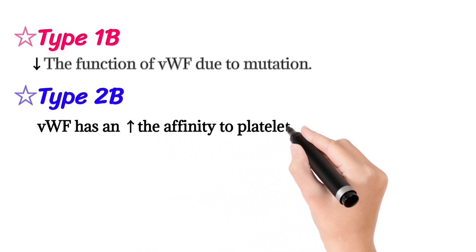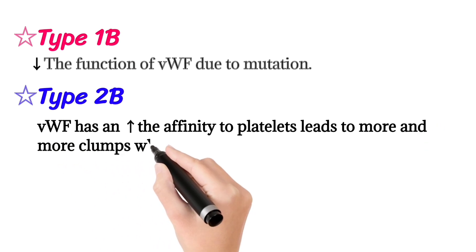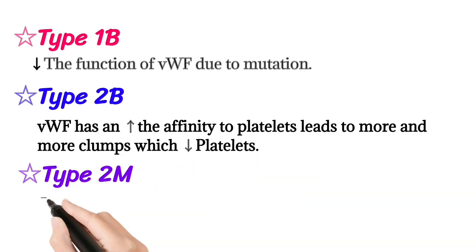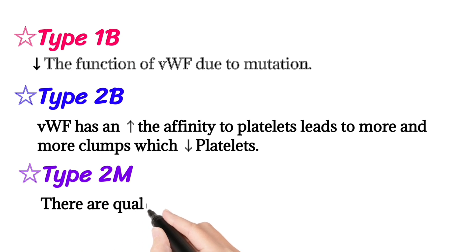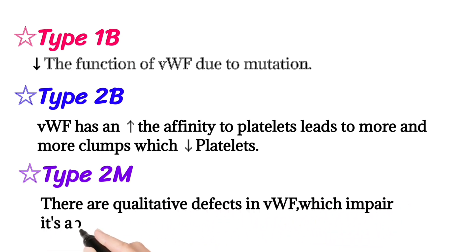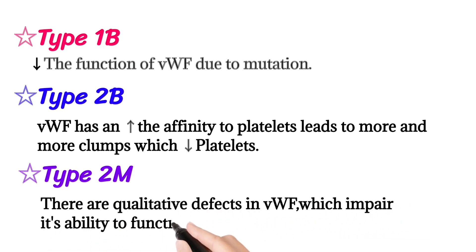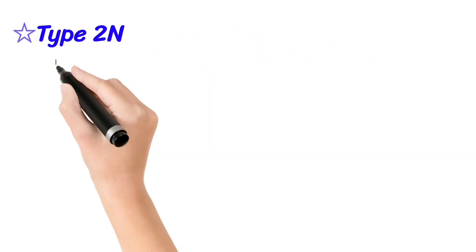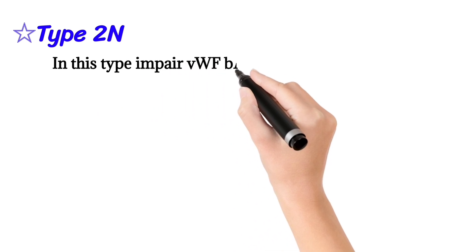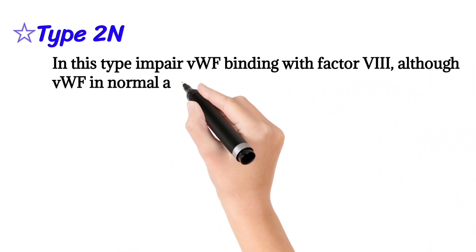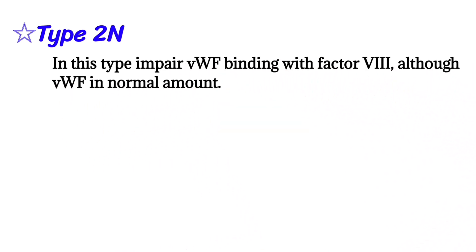Type 2m involves a qualitative defect in von Willebrand factor which impairs its ability to function properly. Type 2n impairs von Willebrand factor binding with Factor 8, although von Willebrand factor levels are normal.